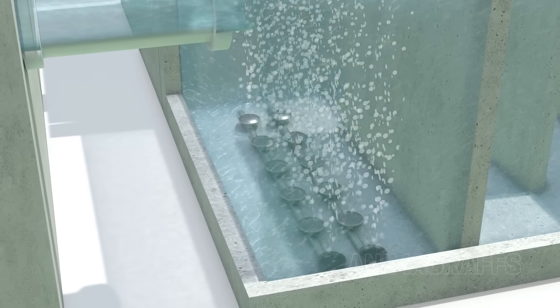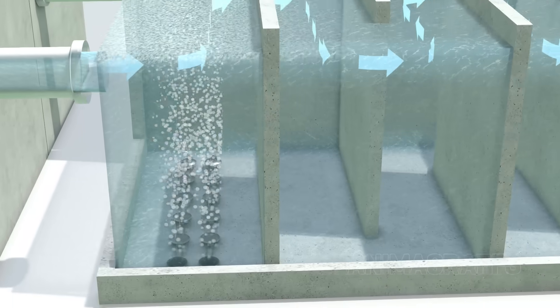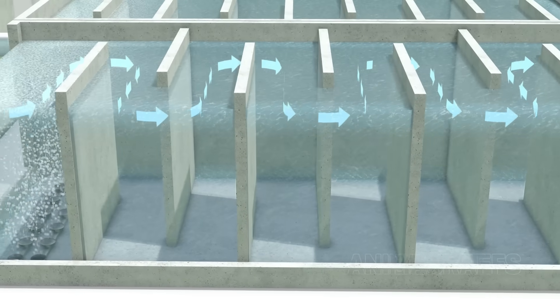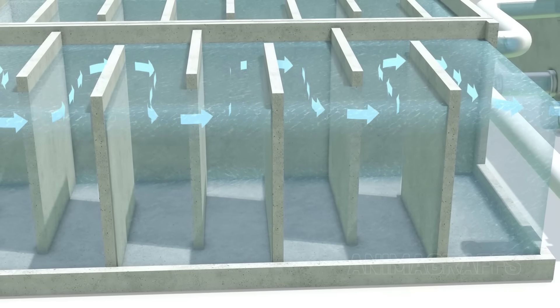In the ozone tank, ozone gas bubbles are injected into the flowing water through diffusers. The tank is divided which slows the flow and gives the water a longer path with more time for ozone to do its job.